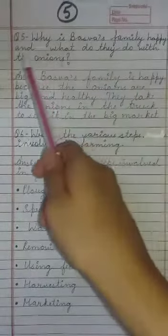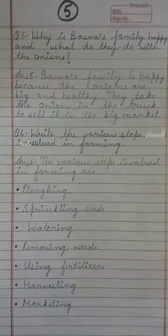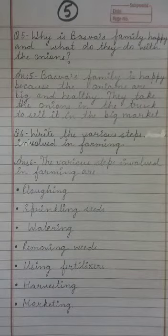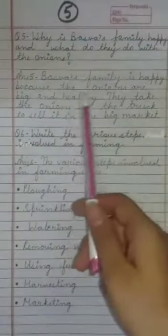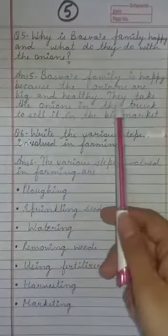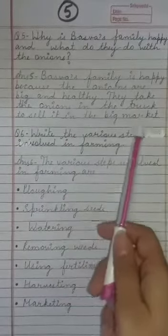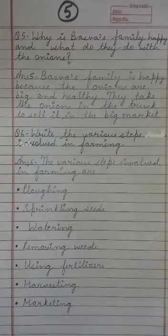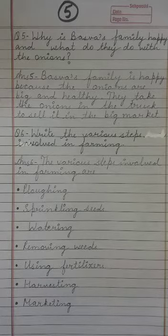Question 5: Why is Baswaa's family happy and what do they do with the onions? Baswaa ki family khush kyun thi aur unhone onions ka kya kiya? Answer: Baswaa's family is happy because the onions are big and healthy. They take the onions in the truck to sell in the big market. Onions bade aur healthy ho gayi thi, aur phir unhone onions ko truck mein bharkar market mein bechne ke liye leke gaye.